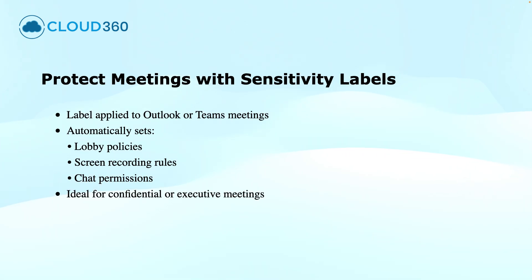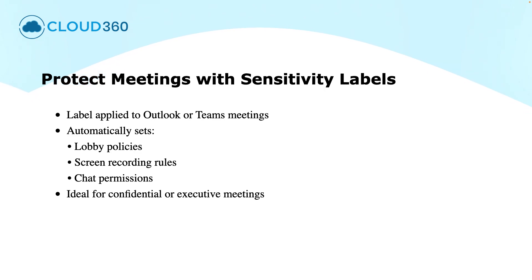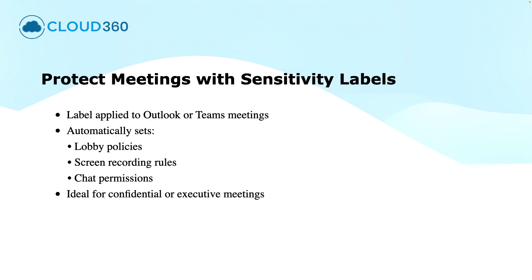Talking about the protection of meetings with sensitivity labels, you can use these sensitivity labels to protect the online meetings. Labels applied to a Teams or Outlook meeting can define the lobby settings, disable recordings, or restrict the chat. This gives you full control over sensitive collaboration sessions.